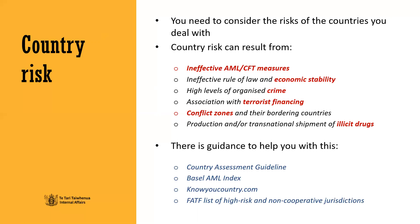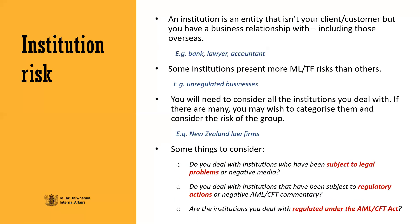The Financial Action Task Force has available on their website a list of high risk and non-cooperative jurisdictions. Finally, you need to assess the risk of the institutions you deal with. An institution is an entity that isn't your client or customer but you have a business relationship with, including those overseas — for example, your business's bank, lawyer or accountant. Some institutions present more money laundering terrorism financing risk than others, for example, unregulated businesses. You will need to consider all the institutions you deal with, and if there are many, you may wish to group them — for example, New Zealand law firms. Some things to consider when assessing institution risk are: do you deal with institutions who have been subject to legal problems or negative media? Do you deal with institutions that have been subject to regulatory actions or negative AML-CFT commentary? Are the institutions you deal with regulated under the AML-CFT Act?